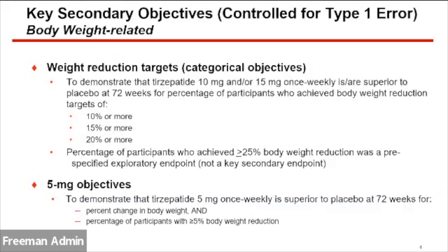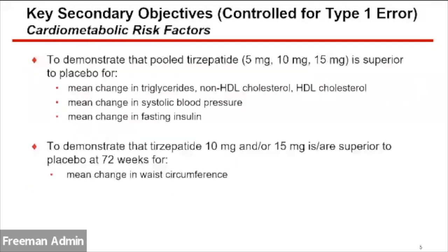The key secondary objectives included looking at weight reduction targets: greater than or equal to 10%, 15%, and 20%. Additionally, there was a key secondary objective for the 5 milligram dose — percent change in body weight and percent of participants with greater than or equal to 5% body weight reduction. Further key secondary objectives looked at cardiometabolic risk factors including triglycerides, cholesterol, systolic blood pressure, fasting insulin, and waist circumference.